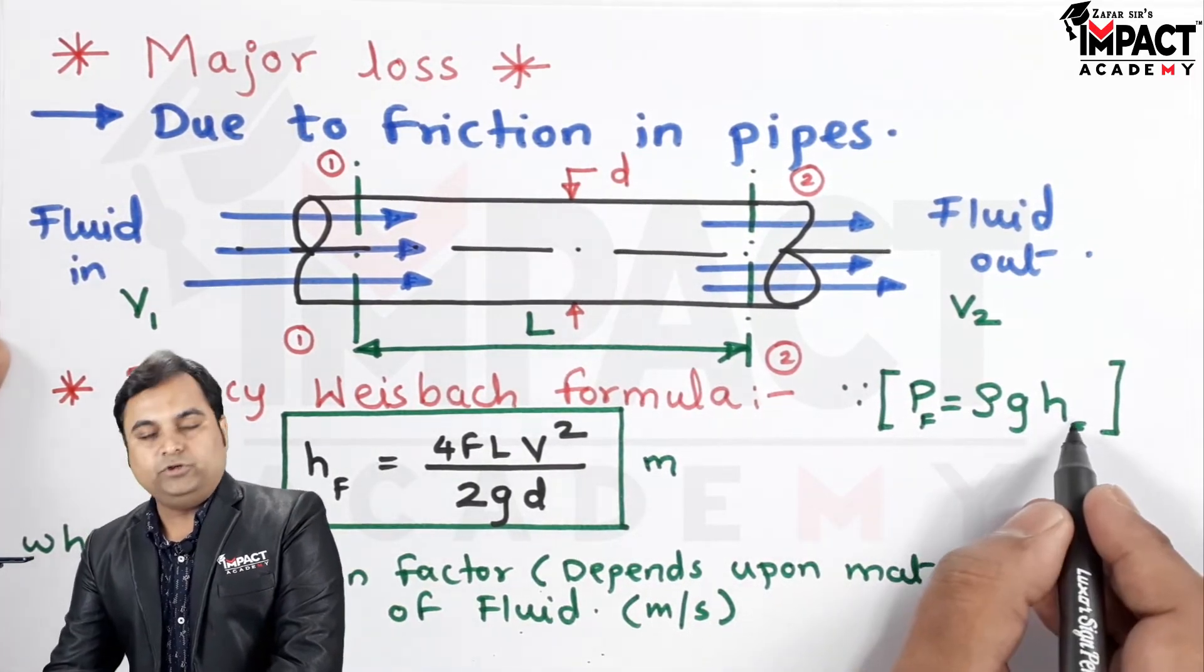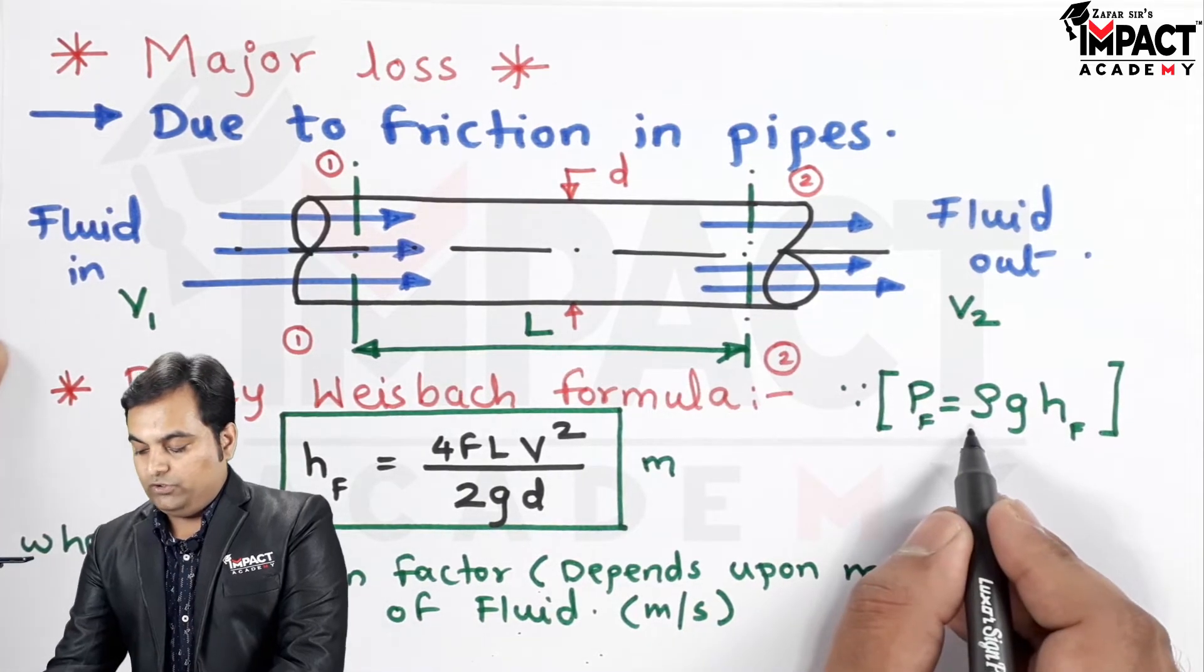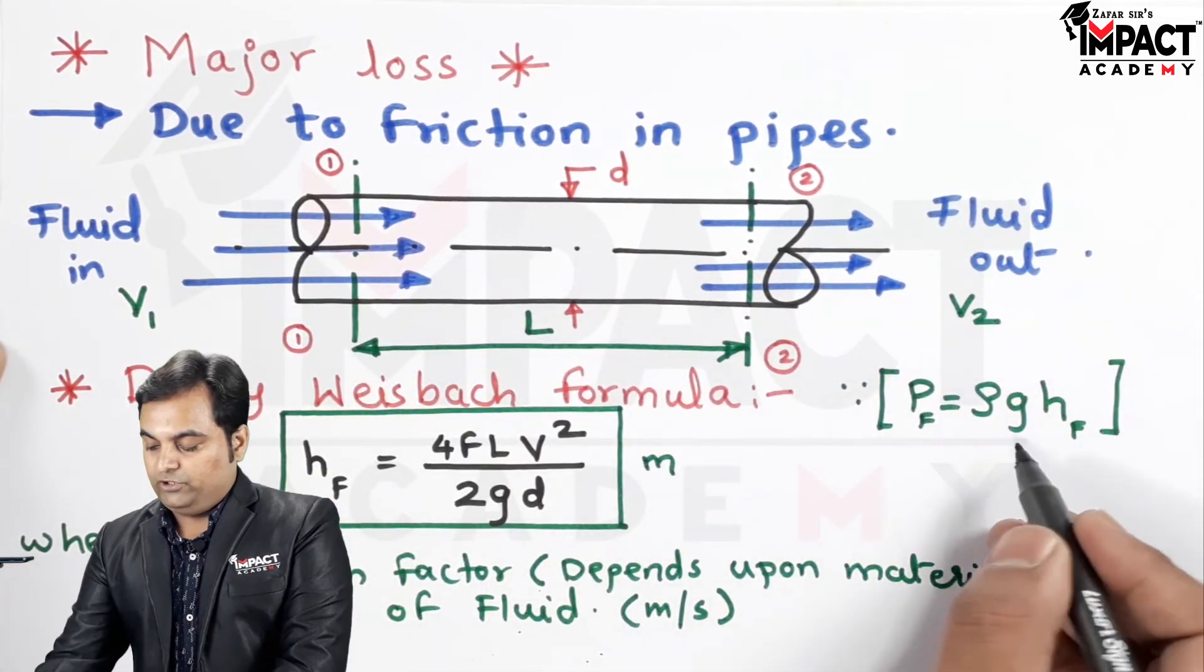Once we know the HF value, we can put this value over here. Rho is the density of the fluid which is flowing, g is 9.81.